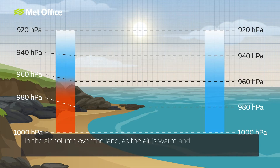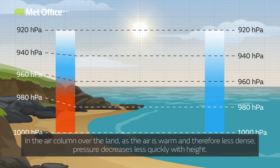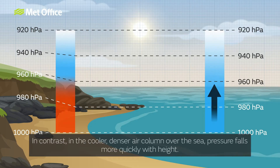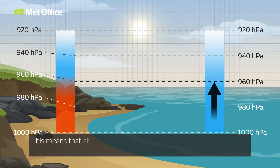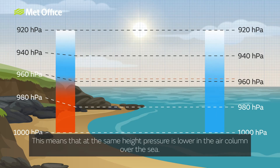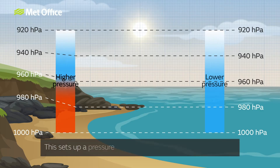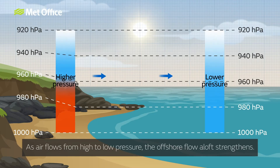In the air column over the land, as the air is warm and therefore less dense, pressure decreases less quickly with height. In contrast, in the cooler denser air column over the sea, pressure falls more quickly with height. This means that at the same height, pressure is lower in the air column over the sea, setting up a pressure gradient between the two air columns. As air flows from high to low pressure, the offshore flow aloft strengthens.